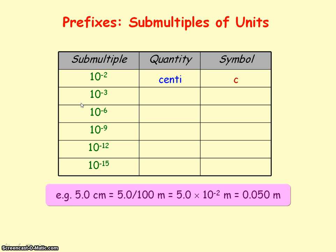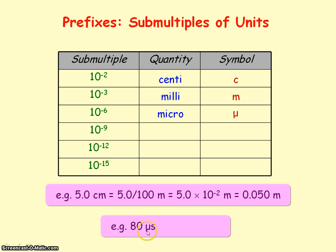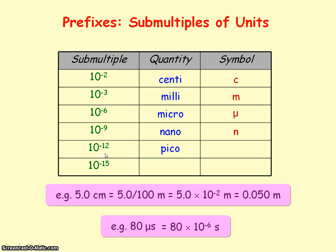10 to the minus 3 is one thousandth of a unit, representing milli. 10 to the minus 6 is one millionth, representing micro, with the Greek symbol mu (μ). So 80 microseconds converted to SI units would be 80 divided by a million, or 80 multiplied by 10 to the power of minus 6. Further submultiples: 10 to the minus 9 is nano, 10 to the minus 12 is pico, and 10 to the minus 15 is femto.